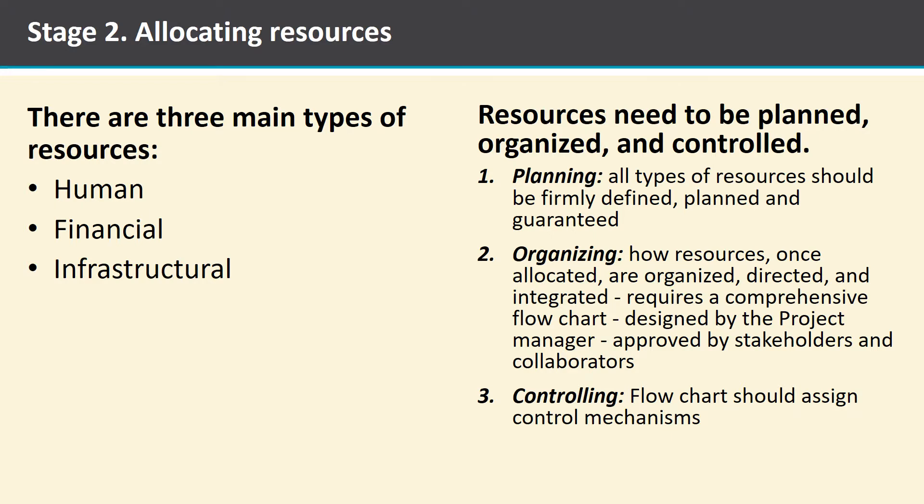Stage two: allocating resources. There are three main types of resources we are concerned about in an action plan: the human, the financial and the infrastructure resources. Three points arise. Planning: all types of resources should be firmly defined, planned and guaranteed. Organising: this is how resources, once allocated, are organised, directed and integrated — it requires a comprehensive flowchart, preferably designed by the project manager and approved by stakeholders and collaborators. Thirdly, controlling: the flowchart should assign control mechanisms.